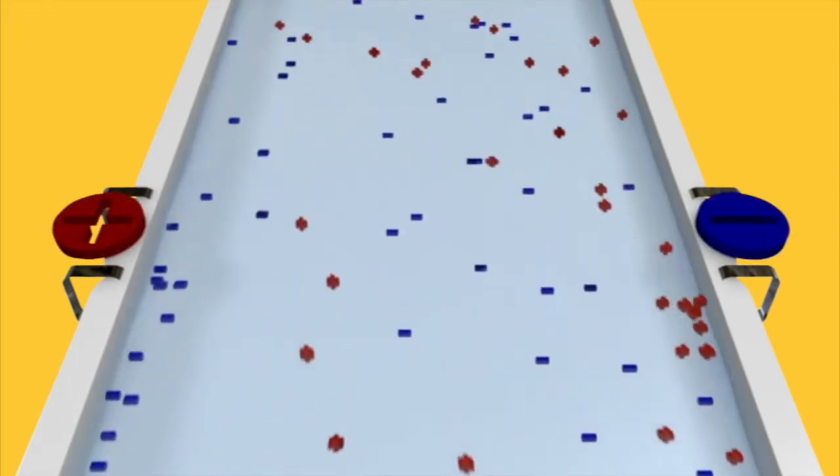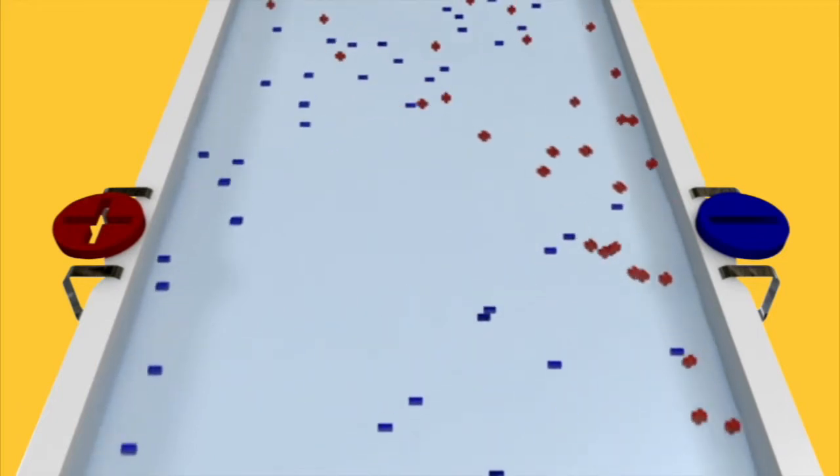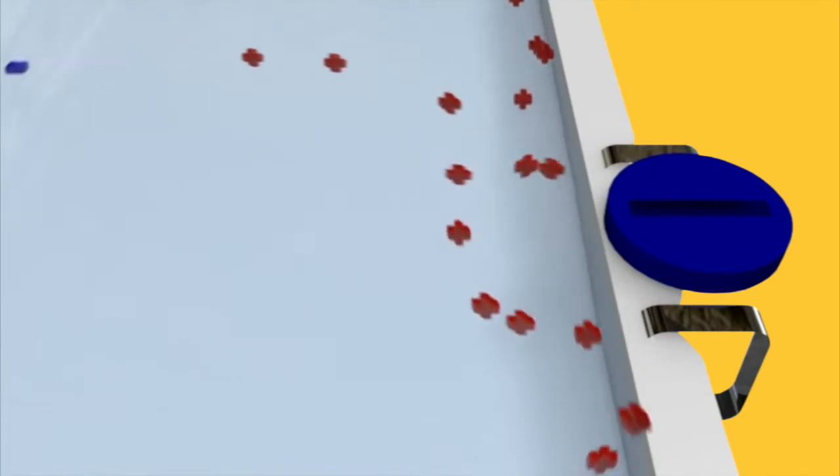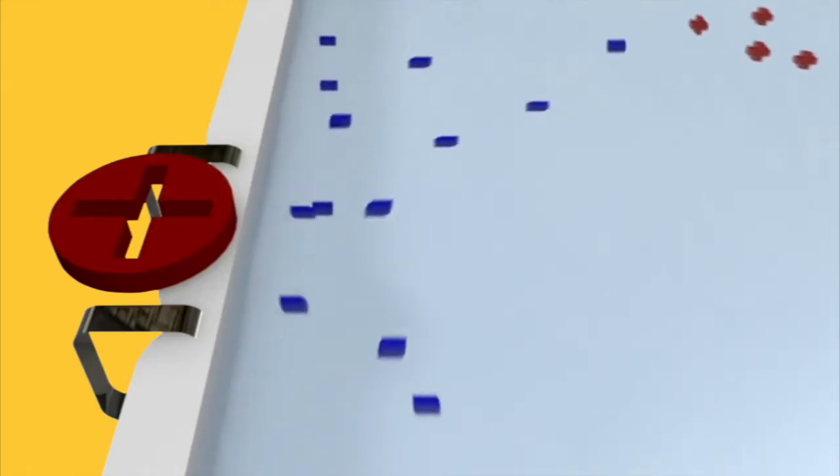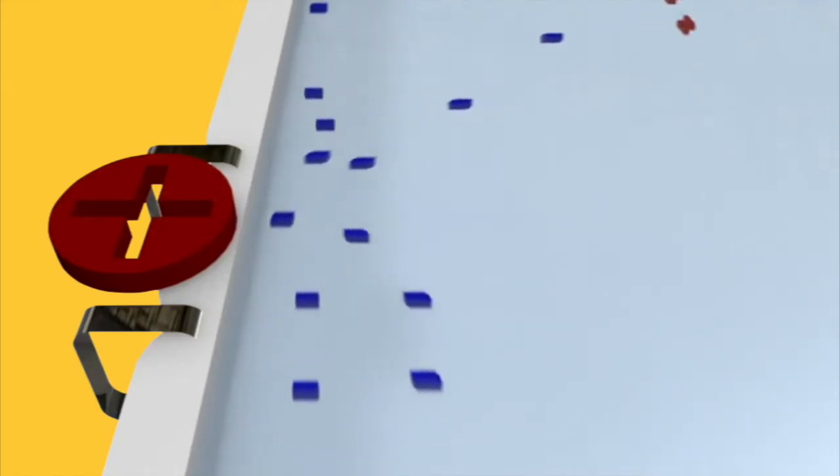Electrodes are placed on each side of the water flow and a small electrical field is applied. This causes the positive ions to migrate toward the negative electrode and the negative ions to migrate toward the positive electrode.